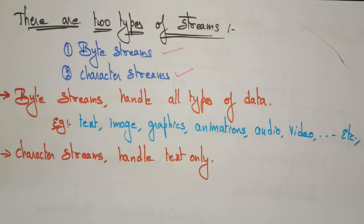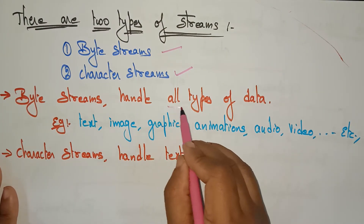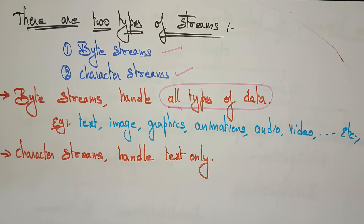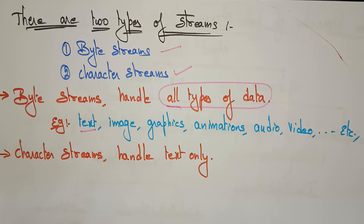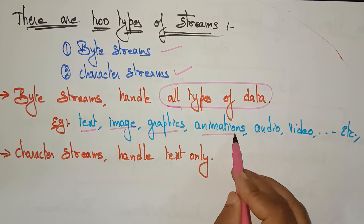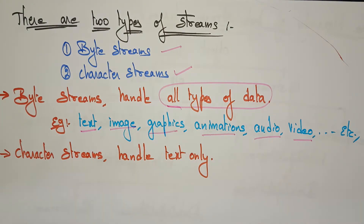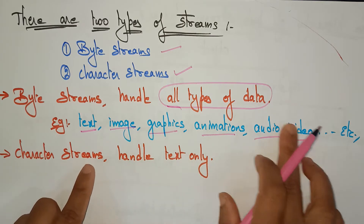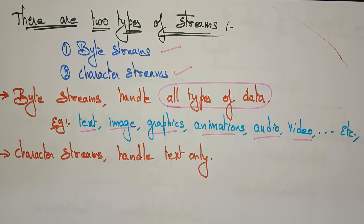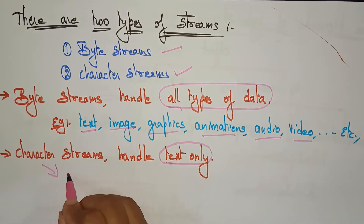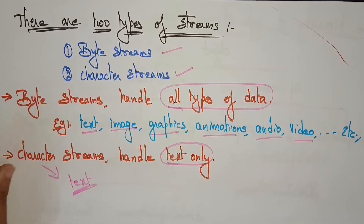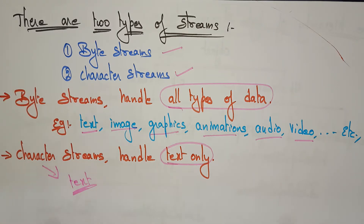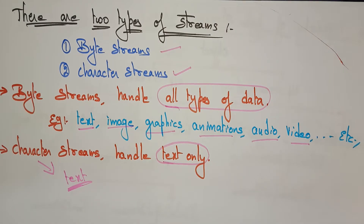Byte streams handle all types of data — for example, text consisting of letters, image (.jpg), graphics, animations, audio, and video. Each one is a different type of data, and all these types of data are handled by byte streams. Character streams, on the other hand, handle only text. If you want to work on only characters, go with the character stream.